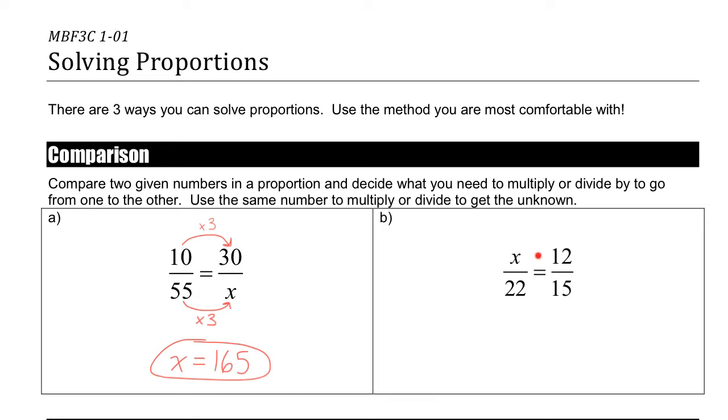So I can do the same thing over here, except now we're going kind of backwards because x is on the left-hand side. So we have to think, OK, when I go from here to here, what do I do? Well, it's not as clear because it's not a nice whole number. 15 times something gets me 22. Well, 15 times 2 is 30. So we must be multiplying by something less than 2. How do we figure out what that multiplying pattern is?